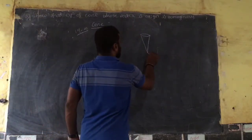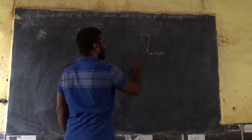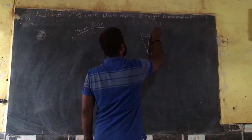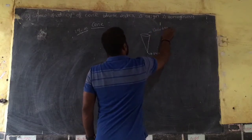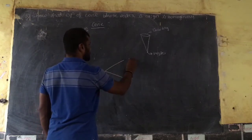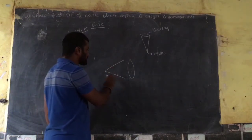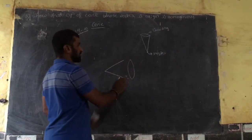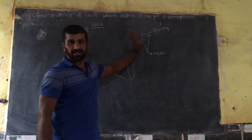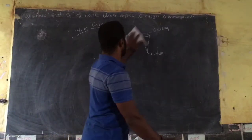The fixed point is called the vertex. The straight line passing through the fixed point is called the generator. The curve it intersects is called the guiding curve. This figure is not a cone because these lines do not intersect the curve.